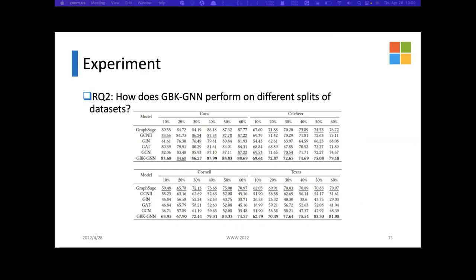The second research question is: how does GBK-GNN perform on different splits of datasets? We perform experiments on seven or six different splits in which the training set contains 10 percent to 60 percent nodes for datasets. This table shows that our model has the best performance on most of the splits.